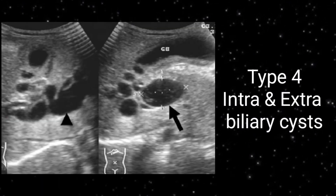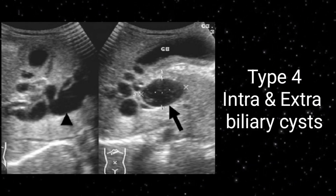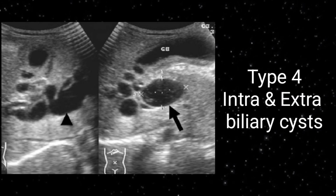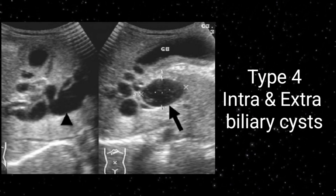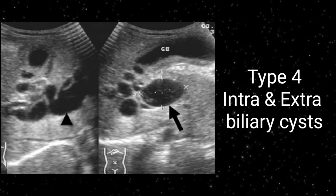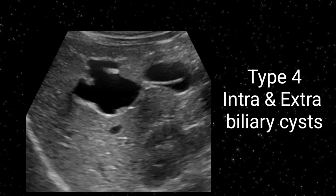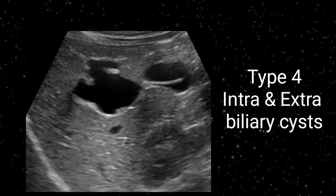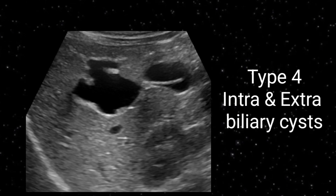Type 4 choledochal cyst is classified as multiple intrahepatic and extrahepatic biliary dilatation. On this image, you can appreciate the gallbladder and adjacent to it there are multiple cystic lesions, alongside a dilated CBD as well. This is an example of extrahepatic biliary cystic dilatation. As Type 4 involves both intra- and extrahepatic biliary cysts, on the next slide there is an image within the liver showing an irregular-shaped cystic lesion — this is intrahepatic biliary cystic dilatation, a particular example of Type 4 choledochal cyst.